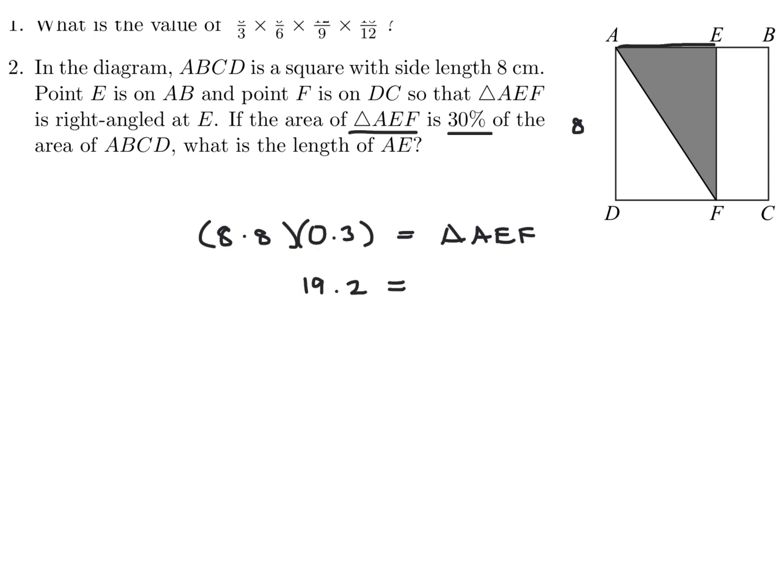So this is 19.2, 64 times 0.3. Now, for triangle AEF, we can figure out the area 1 half base times height. So the base will use AE, and the height we can use EF. So we have 19.2 is equal to 1 half AE times EF. Well, EF is 8. So therefore, 19.2 is equal to 4 times AE. And then when you divide through by 4, you get AE equal to 4.8.